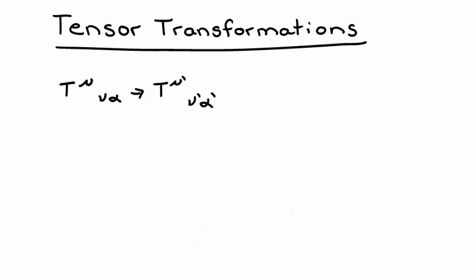Let's take a look at this example. We want to transform the tensor t upper mu lower nu alpha to t upper mu prime lower nu prime alpha prime. Because we're transforming three indices, we'll need three different lambdas to act on the original tensor. We can fill in the indices knowing that mu, nu, and alpha must all be contracted indices. Thus, the first lambda should have an upper mu prime and a lower mu. The second lambda should have a lower nu prime and an upper nu, and the third lambda should have a lower alpha prime and an upper alpha.